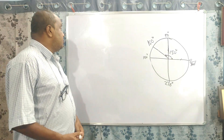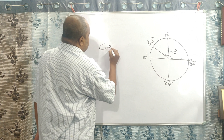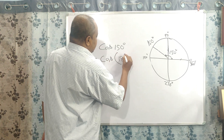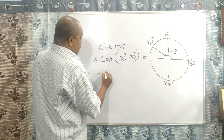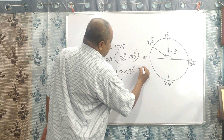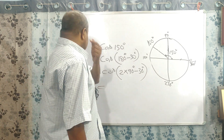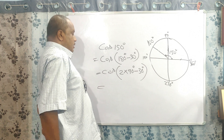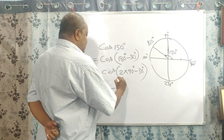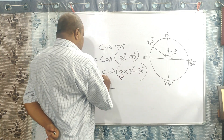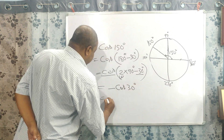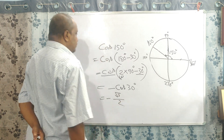Now if we consider cos of 150 degrees: cos(180° − 30°), which can also be written as cos(2×90° − 30°). In this quadrant the value of cos is negative, so a negative sign comes. Since 2 is an even number, cos will not be changed and it will remain as cos, with angle 30 degrees. So cos(150°) = minus cos(30°) = minus √3/2.